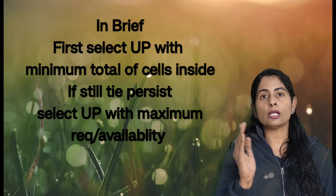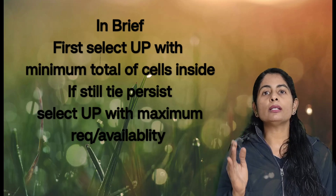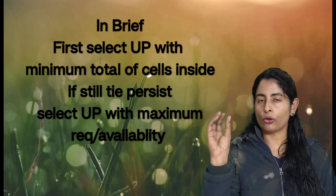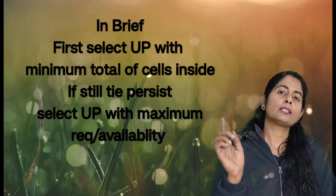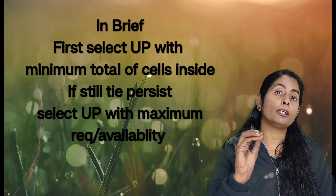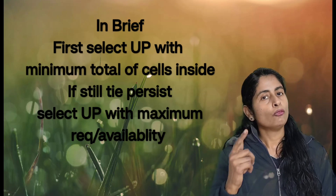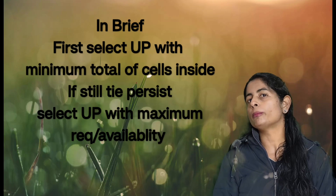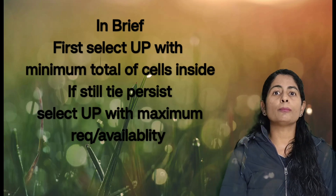If still the total comes out to be the same, you compare the particular requirement and availability. The cell having the particular availability or requirement which is maximum, you will select that. This is how you break the tie in case any tie comes in Vogel's Approximation Method. It will lead you to a solution at a very early stage, or it will lead to a solution that is the optimum one. You can always follow these rules to break the tie.